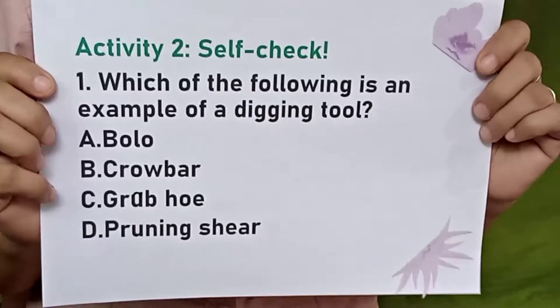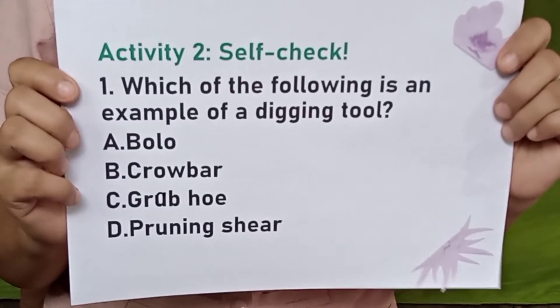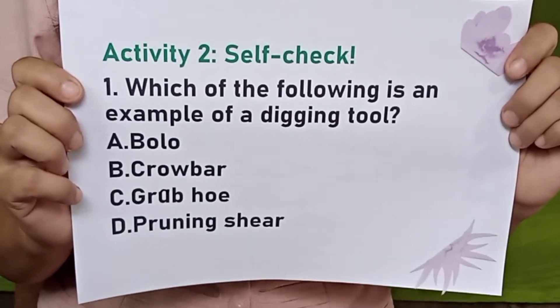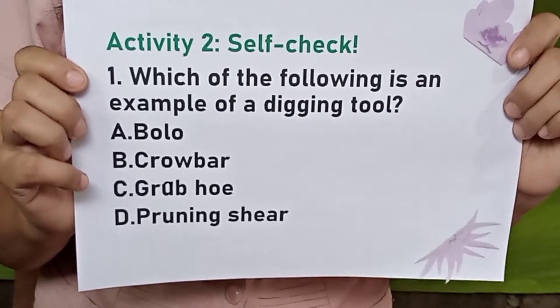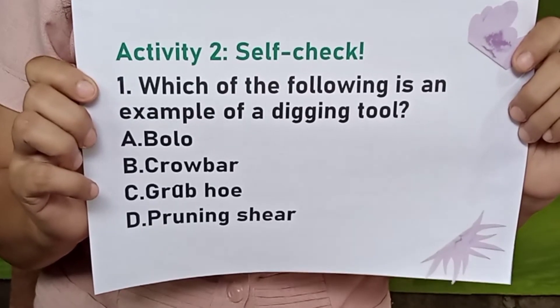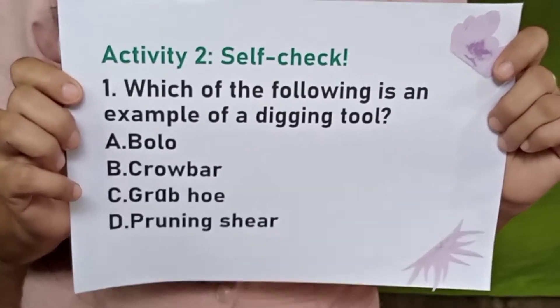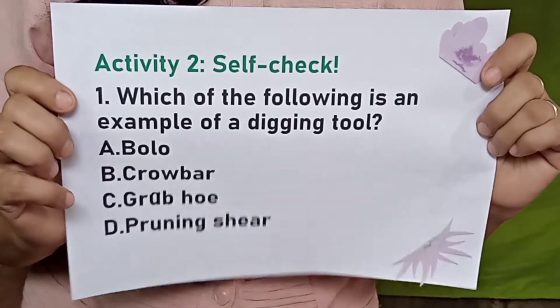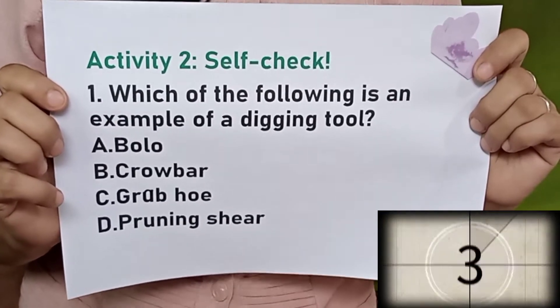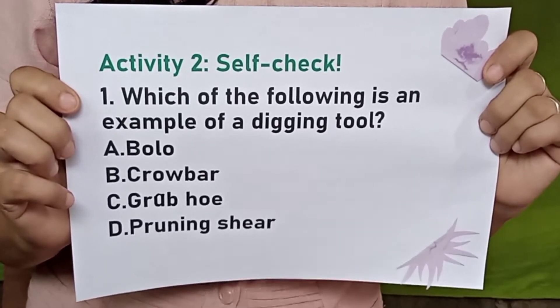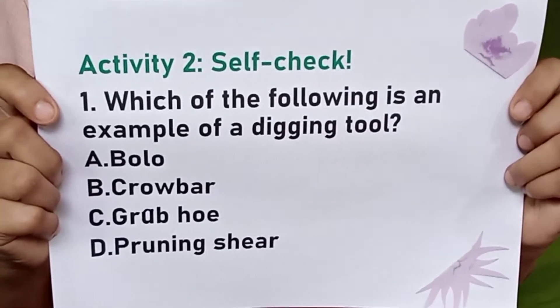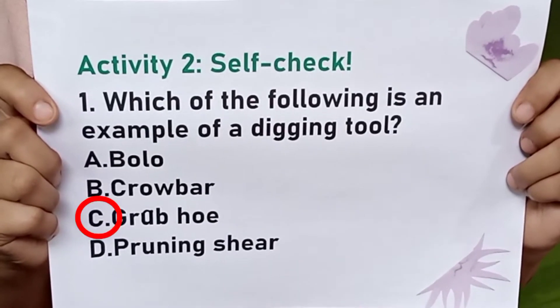Now let us go to our second activity, which is a self-check. Number one: which of the following is an example of a digging tool? Letter A, bolo. Letter B, crowbar. Letter C, grab hoe. And letter D, pruning shear. The correct answer is letter C, grab hoe.